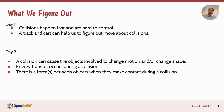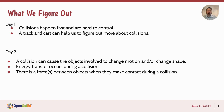On day one, we figure out that collisions happen fast and are very hard to control, and that using a track and cart can help us learn more about collisions. On day two, we figure out that collisions can cause objects to change motion and/or change shape, that there is an energy transfer occurring during a collision, and that there are forces between objects when they make contact during a collision.